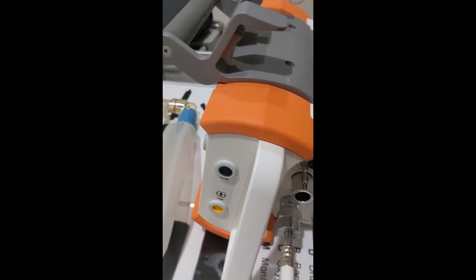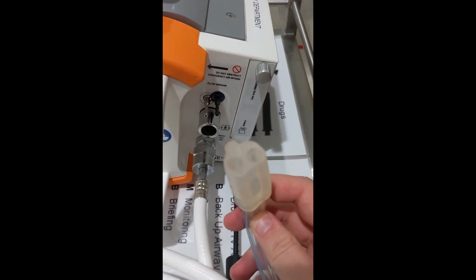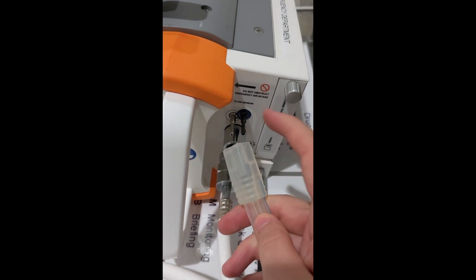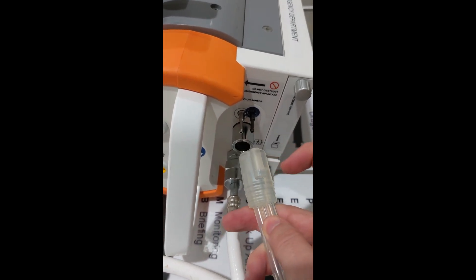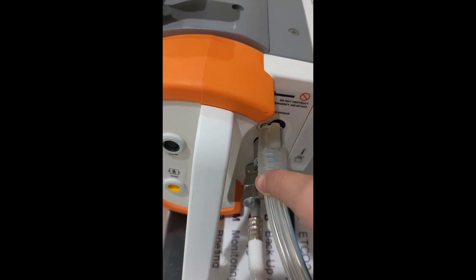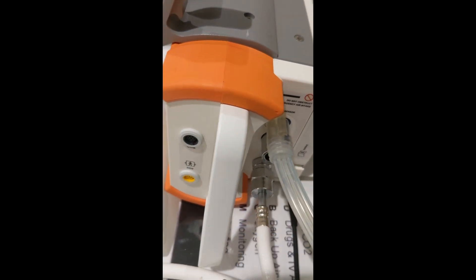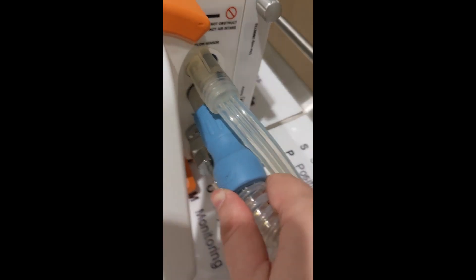Next we're going to attach the breathing circuit to the side of the ventilator. This port is the flow sensor. It only fits one way. This square section goes towards the top. It will slide on easily. Then we put the bigger blue connector onto the big silver connector and secure it.